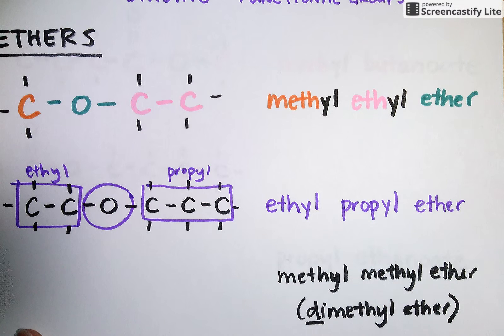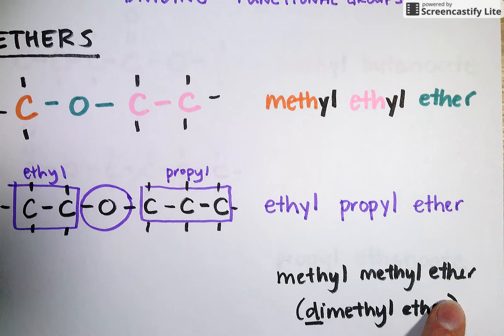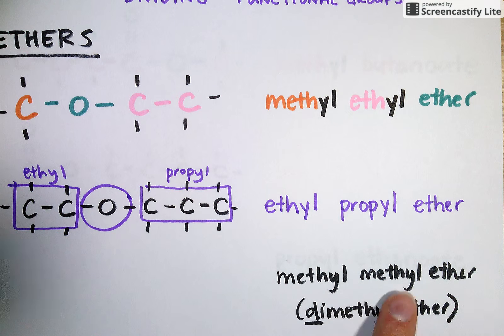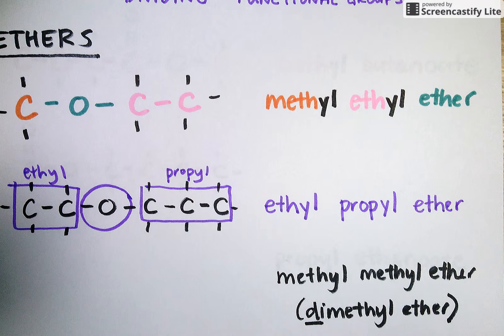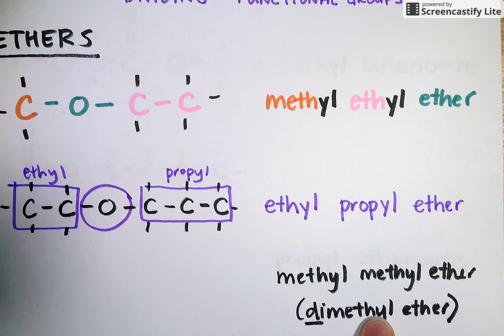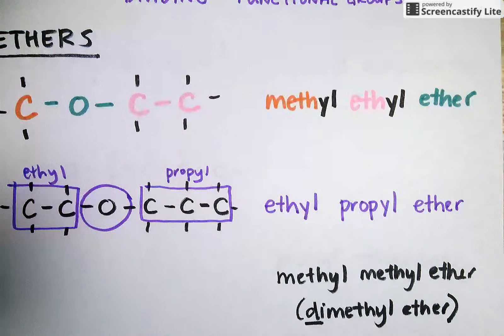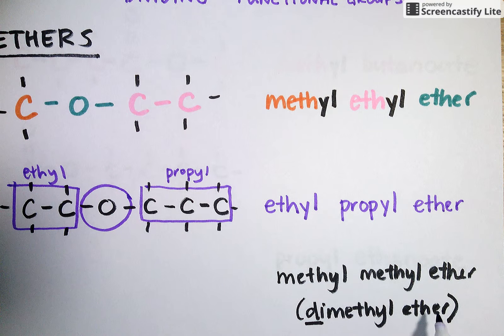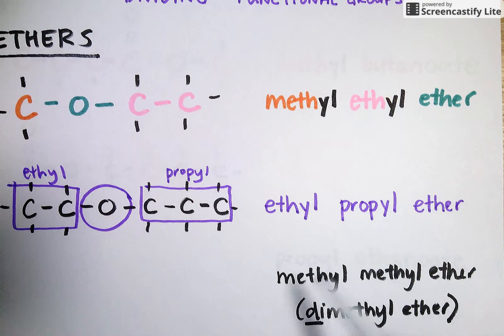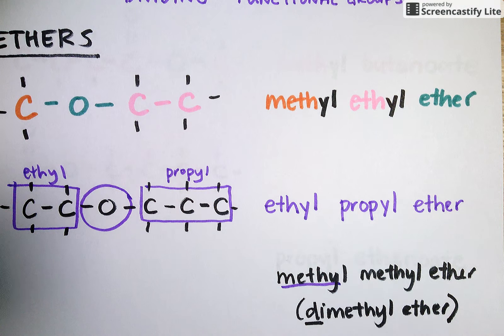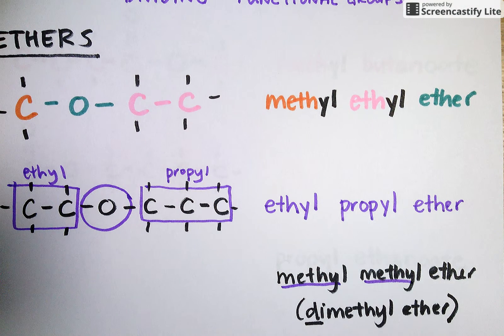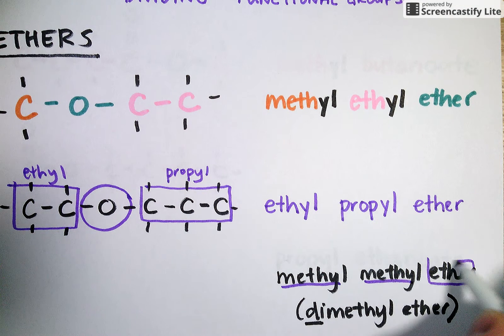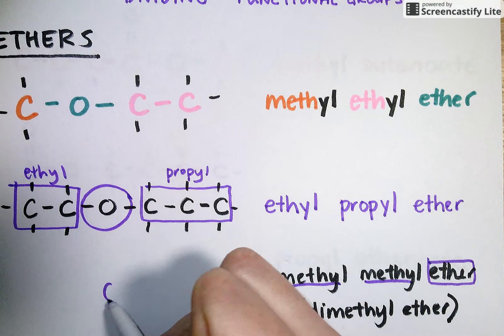Let's use the same logic again to draw the compound represented by the name methyl methyl ether. You may also see this written as dimethyl ether to kind of condense it down and make it less silly sounding. But that's just telling us we've got two methyl attachments to the ether functional group. So I see methyl as one group, methyl as a second group, and those two attachments are to the ether functional group.